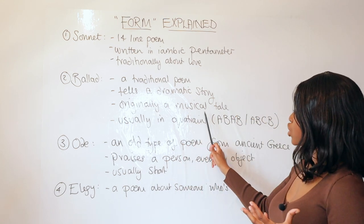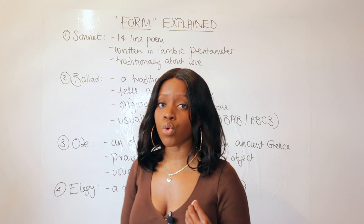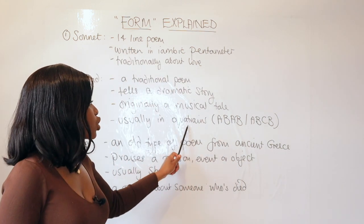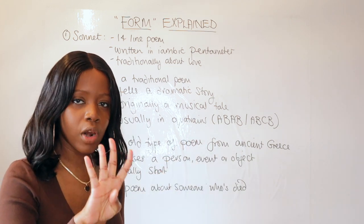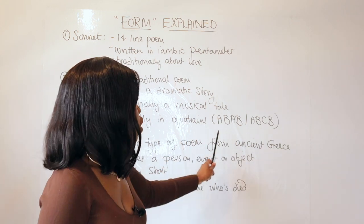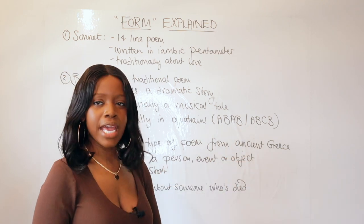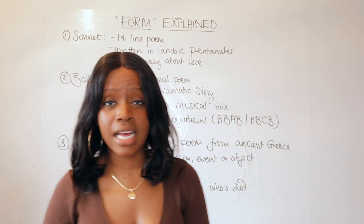It was originally written as a musical tale. It's a very old style of poem, and we usually find ballads are written in quatrains—in other words, four-line stanzas—which are in terms of the rhyme scheme ABAB rhyme scheme or ABCB. That's a ballad.